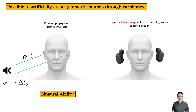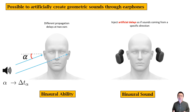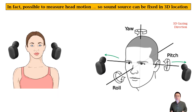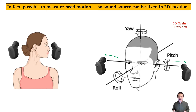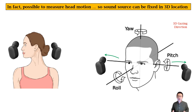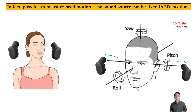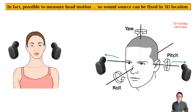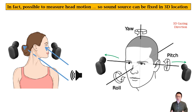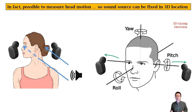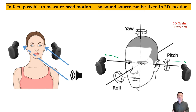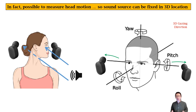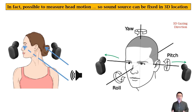By artificially injecting delays in the two earphones, it is possible to make the brain believe that the sound is coming from a desired direction. We call such artificially created sound binaural sound. Of course, as the user turns her head, the earphone will turn and the sound will also turn along with it. But if we want to fix the global location of the sound source, we just need to track the orientation of the human head and create a binaural sound by compensating for the head rotation. This is made possible by smart earphones that have an IMU inside.